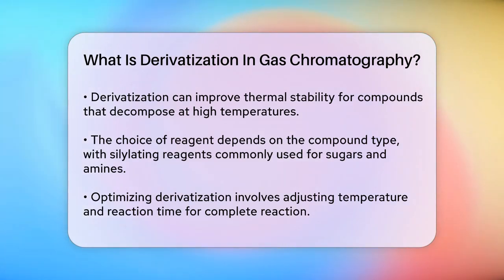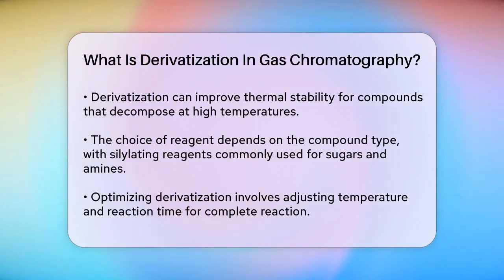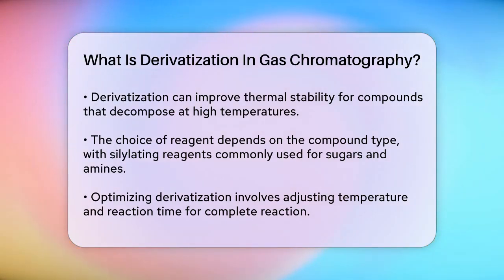The choice of derivatization reagent depends on the type of compound you're working with. For sugars, phenols, weak acids, amines, amides, and thiols, silylating reagents like hexamethyldisilazane (HMDS) or N,O-bis(trimethylsilyl)trifluoroacetamide (BSTFA) are commonly used.